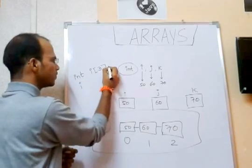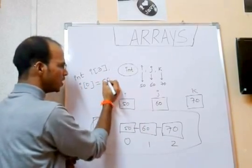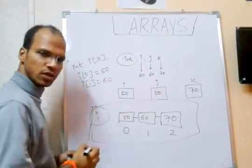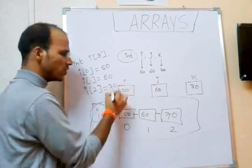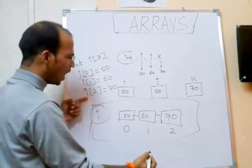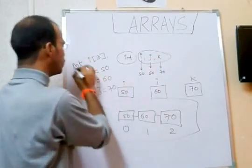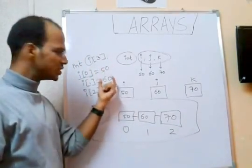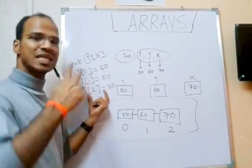If I want to store 50 at location 0, I write 'i[0] = 50'. I am saving 60 at 'i[1]', and saving 70 at 'i[2]'. So i[0] = 50, i[1] = 60, i[2] = 70. This is how you can use arrays — instead of using 3 different variables, you use only 1 variable with 3 locations: 50 at index 0, 60 at index 1, and 70 at index 2.